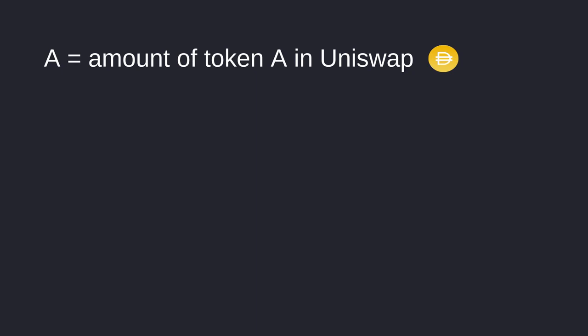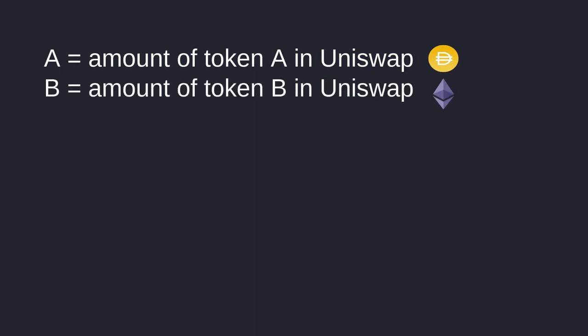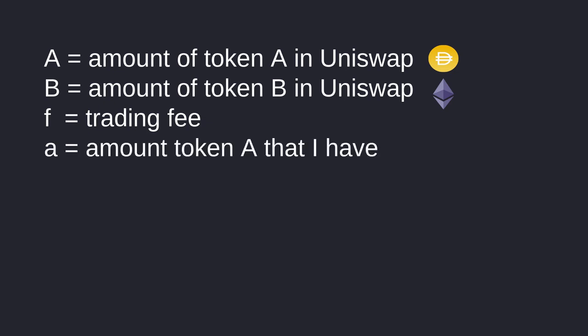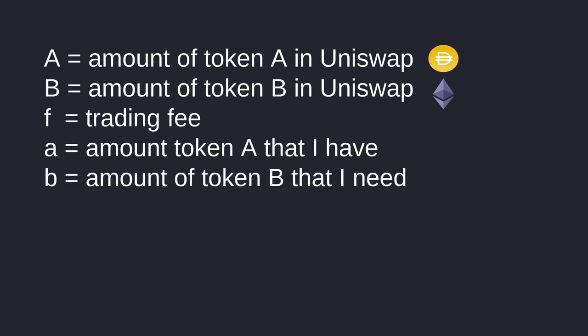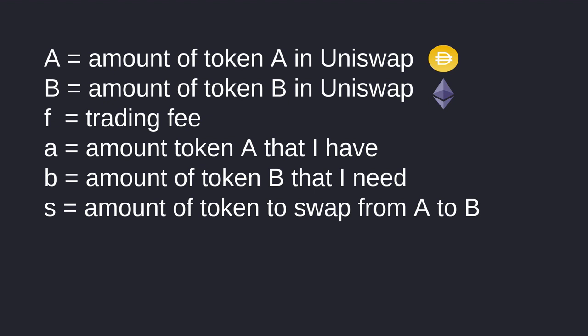We'll say that uppercase A is the amount of token A in Uniswap, uppercase B is the amount of token B in Uniswap, F is the trading fee for trading from token A to B and also from token B to A, lowercase a is the amount of token A that I have, lowercase b is the amount of token B that I need, and S is the amount of token to swap from A to B. Our final goal is to find S — at this point we don't know what b is and we also don't know what S is.